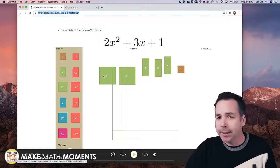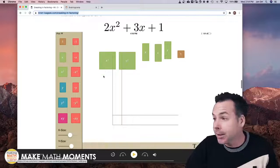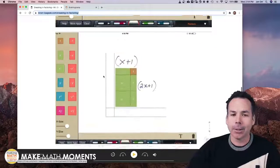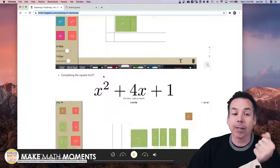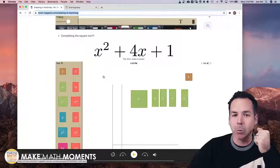You can sneak in types where the trinomial where you have a is not equal to one and so you've got to build a rectangle. Still the same thing is true, building a rectangle and students are going to say hey if I can build a rectangle I can factor and that's the goal right, like we want to be able to be factoring well.